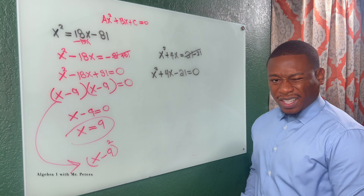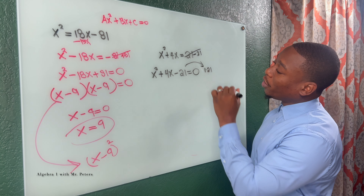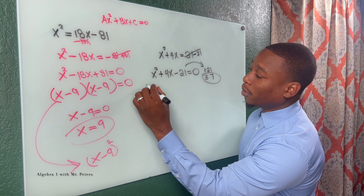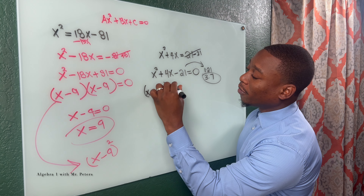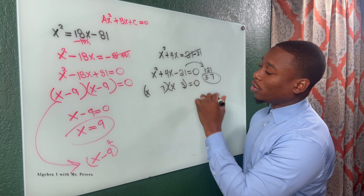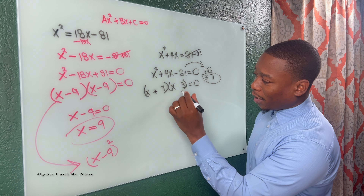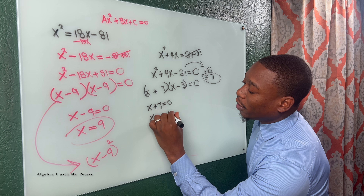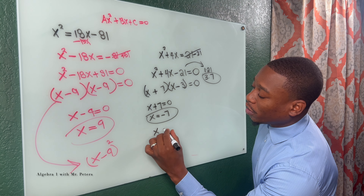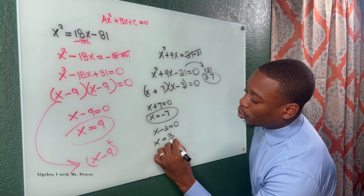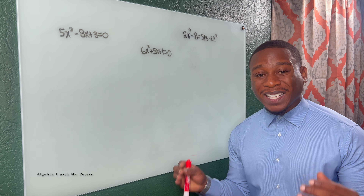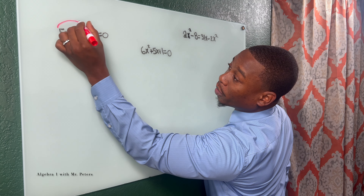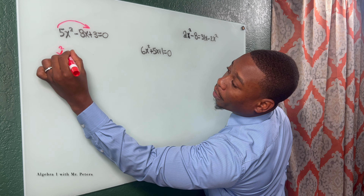Second rearranging example: we only need to move twenty-one. Subtracting gives x squared plus four x minus twenty-one equals zero. Drawing out the factors, we have one times twenty-one and three times seven. To get four in the middle, it must be three and seven. The larger number is positive, so we have x plus seven and x minus three equals zero. Setting each factor equal to zero, x equals negative seven or x equals positive three.